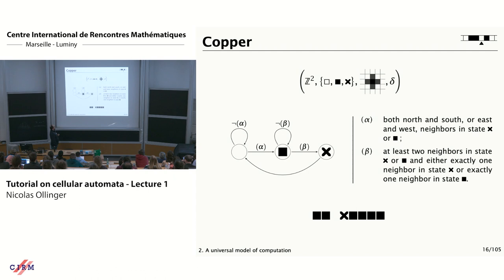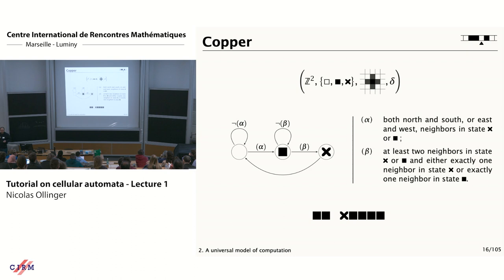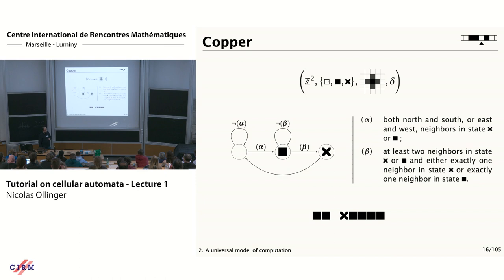How do you move from one state to the other? When in the empty state, you move to the full state if condition alpha is fulfilled: you have two neighbors which are opposite and non-empty — either east-west, or north-south, or both. For condition beta, to go from full to activated, you need at least two neighbors which are non-empty, and among your non-empty neighbors, exactly one which is in a state different from the others. If you take a wire of full states going horizontally with one activated state, you can see this signal will move to the right and continue to do so.